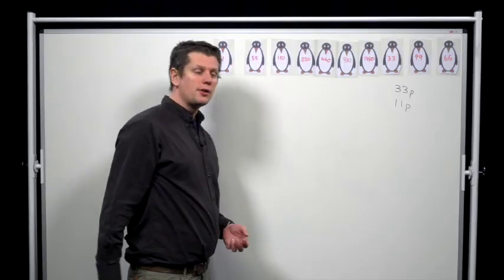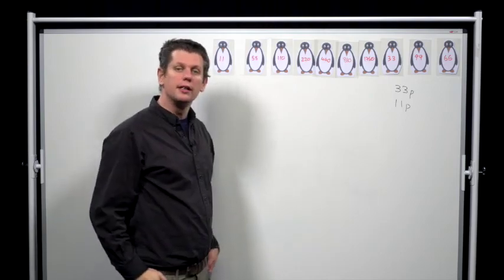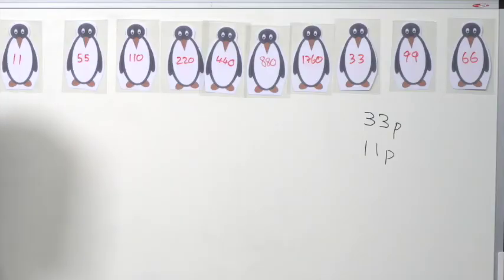So at the end of the process, the penguin immediately in front of penguin 33 is penguin 1760.